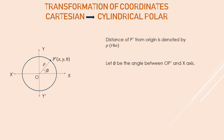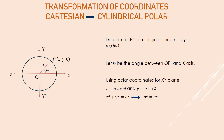Now let phi be the angle between OP' and the x-axis — I am using phi as the notation for the angle with the x-axis since we used the same notation in the spherical system. Using polar coordinates of the xy-plane, x = rho·cos(phi) and y = rho·sin(phi). Also, x² + y² = a² becomes rho² = a². The z-coordinate is kept as z only, because the cylinder expands in the z-direction, so z is unchanged in the cylindrical coordinate system.